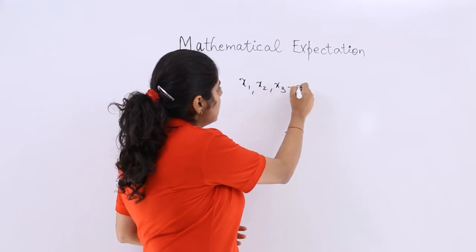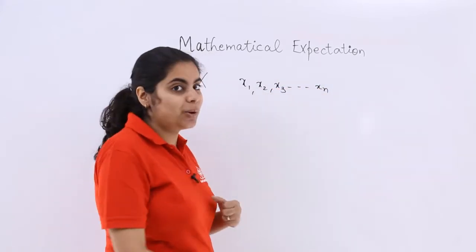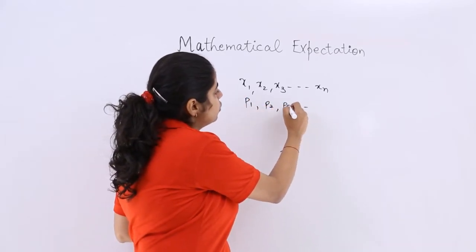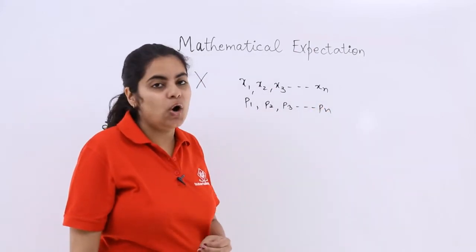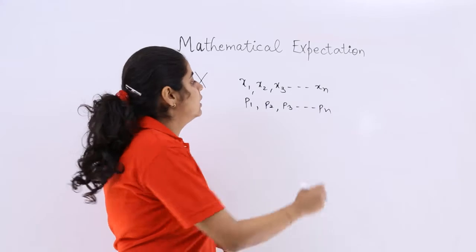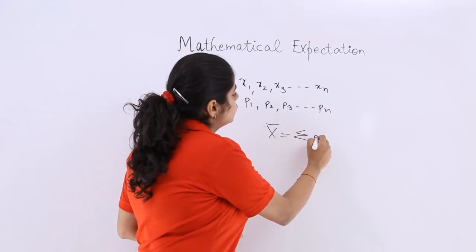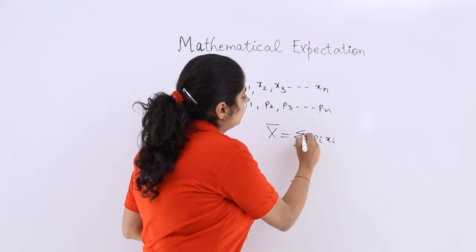x3 and so on up till xn, with the respective probabilities as p1, p2, p3 and so on up till pn. Then the mean of that discrete random variable is denoted by X bar, which is equal to summation pixi, i is equal to 1 to n.